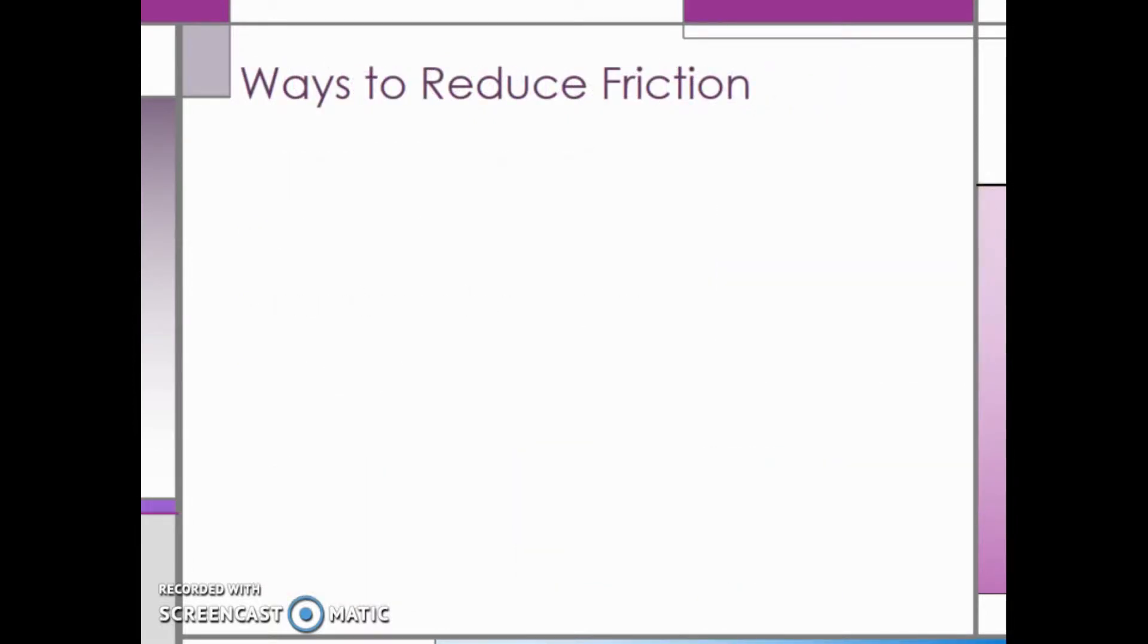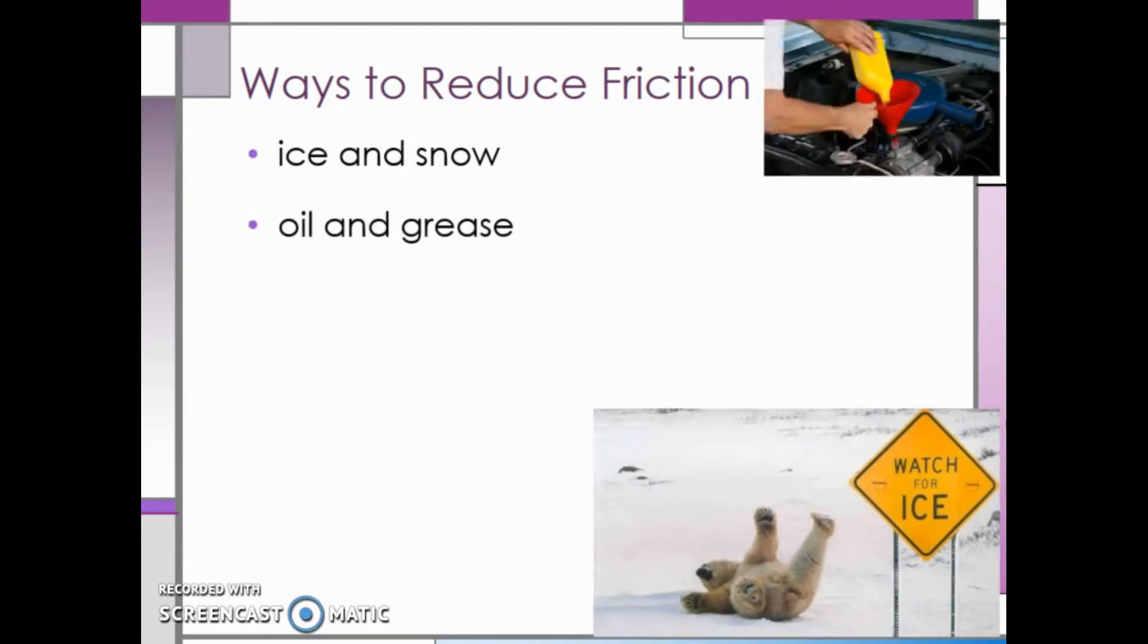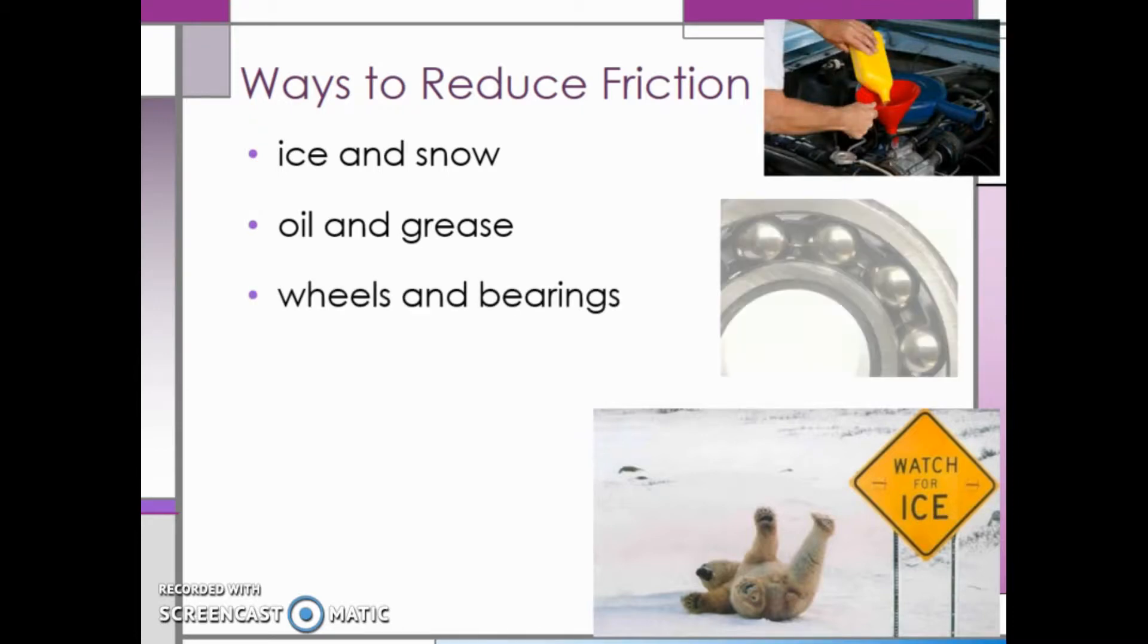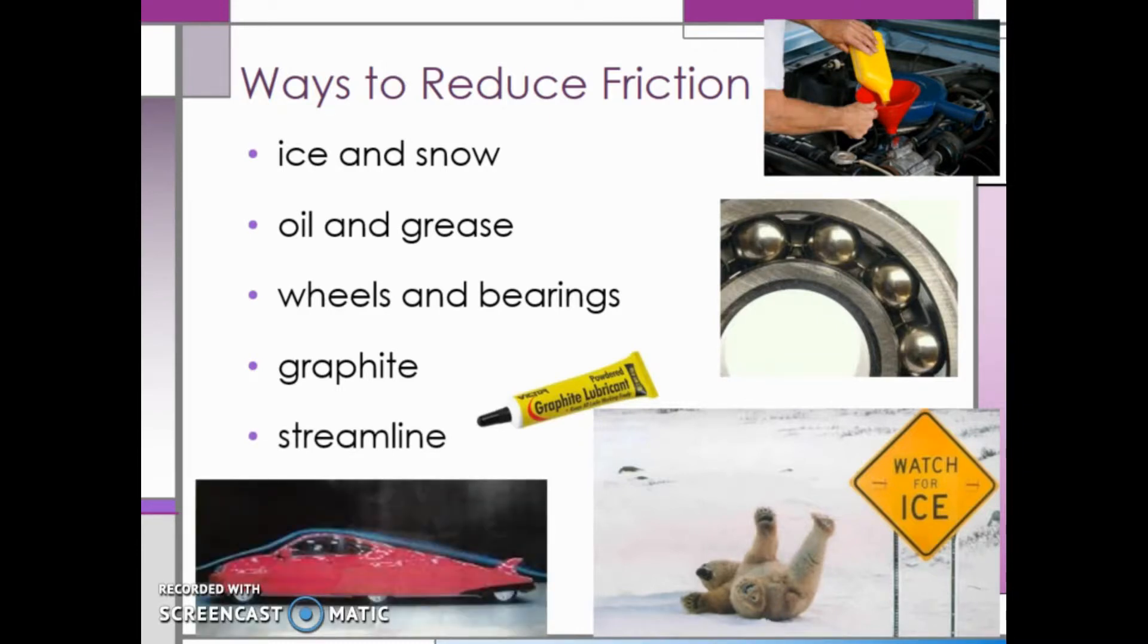Even though friction can be a bad thing, there are ways we can reduce friction. For example, ice and snow reduce friction, although this may be considered a bad thing. Oil and grease also reduce friction between metal parts, which is why you need oil in an engine. Wheels and bearings reduce friction since they constrain the relative motion and reduce friction between moving parts to only the desired motion or free rotation. Graphite helps reduce friction since it acts as a dry lubricant. You can also reduce air drag by a more streamlined vehicle.